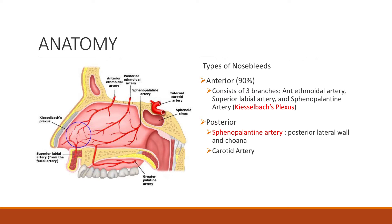So just to figure out where epistaxis usually occurs — it can either be anterior or posterior. Usually 90% of bleeds occur anteriorly, and that's going to be in Kiesselbach's plexus. For posterior bleeds, you need to consider most likely the palatine artery or it can actually be the carotid artery.